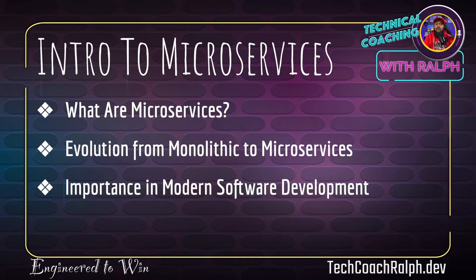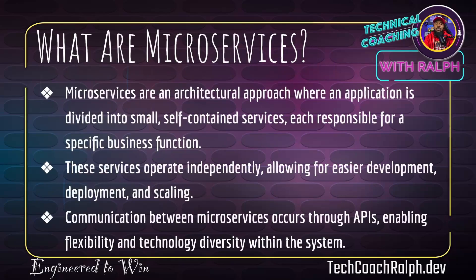So intro to microservices — what are microservices? Microservices are an architectural approach where an application is divided into small, self-contained services, each responsible for a specific business function. It's not like everything is in one application. We're breaking it up into very small, specific pieces of functionality, and then we're going to use those accordingly and connect them to one another.